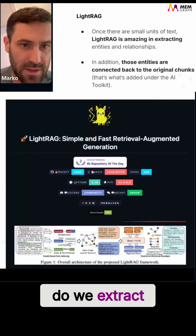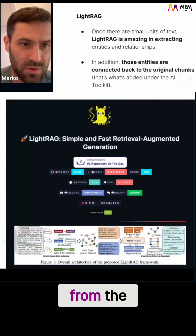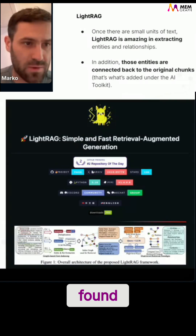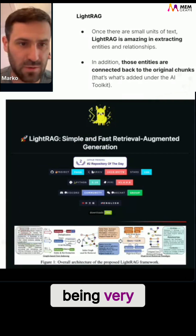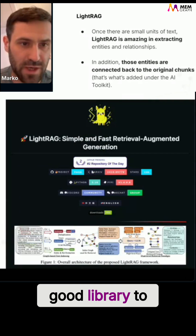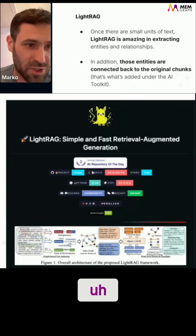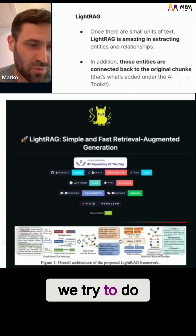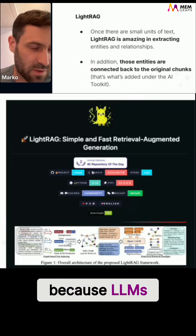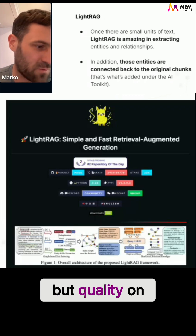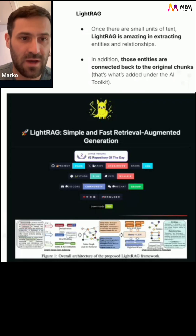The question is, how do we extract entities and relationships from the document? We found Lightrack as being a very good library to do that. We tried some simpler approaches because LLMs are expensive, but the quality on legal documents is amazing with Lightrack.